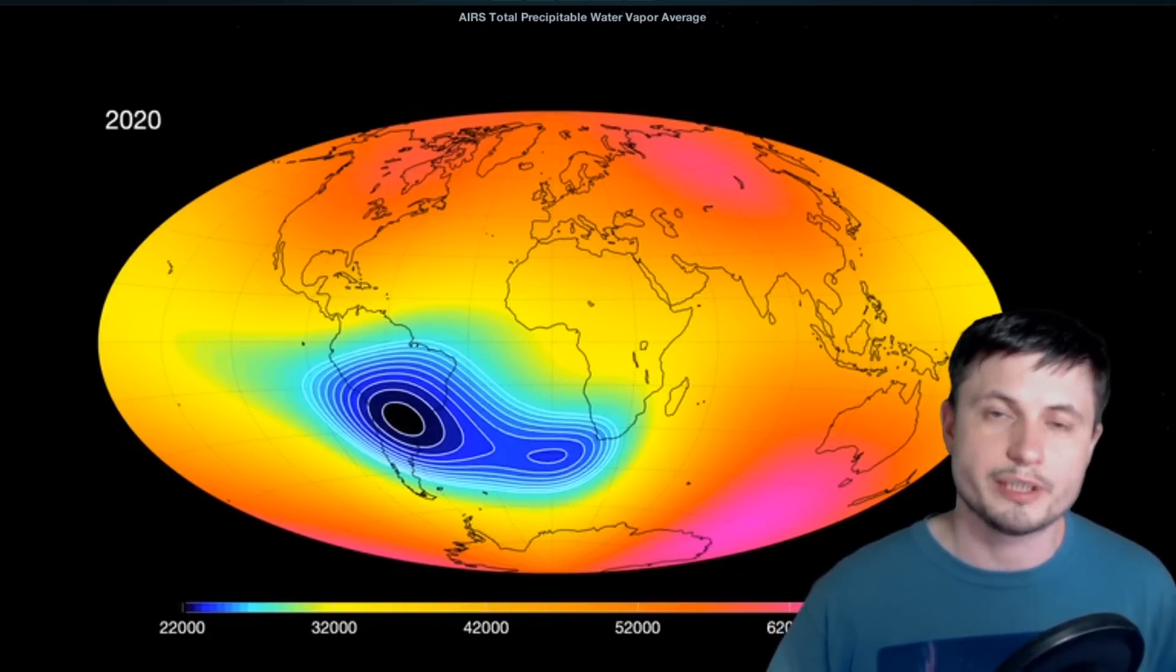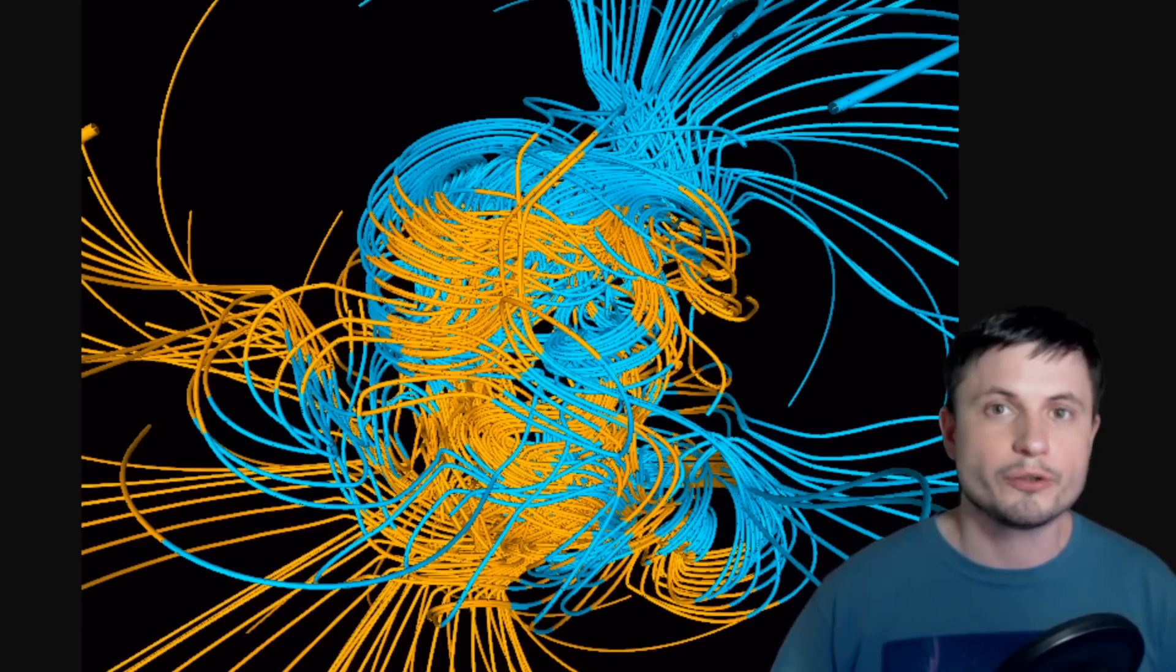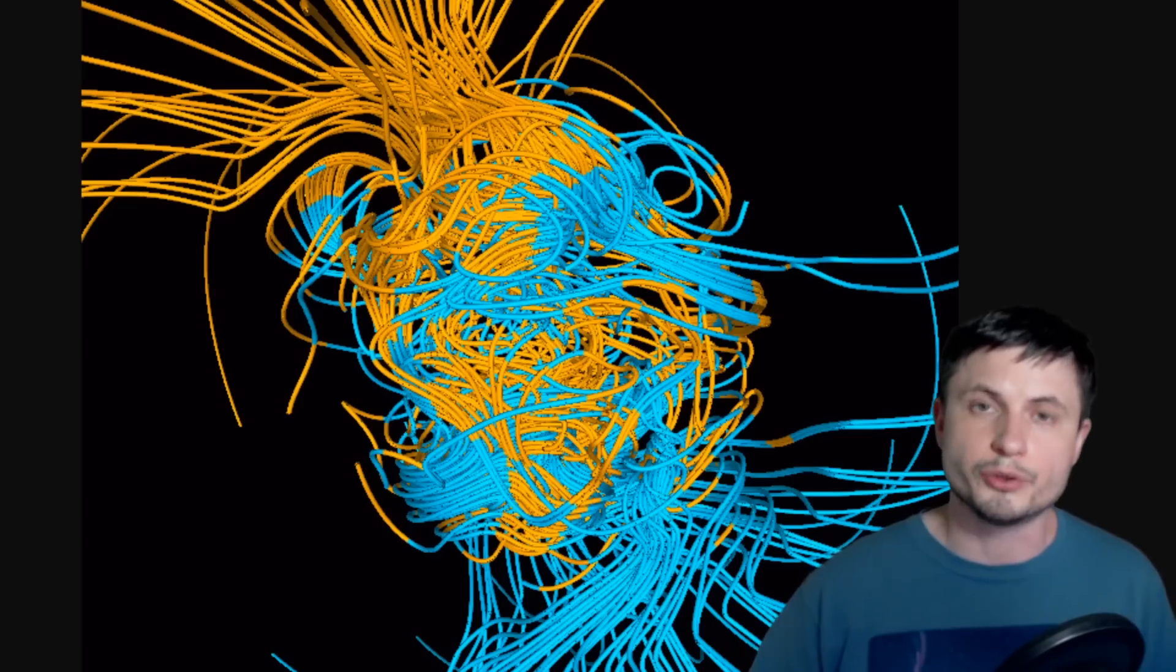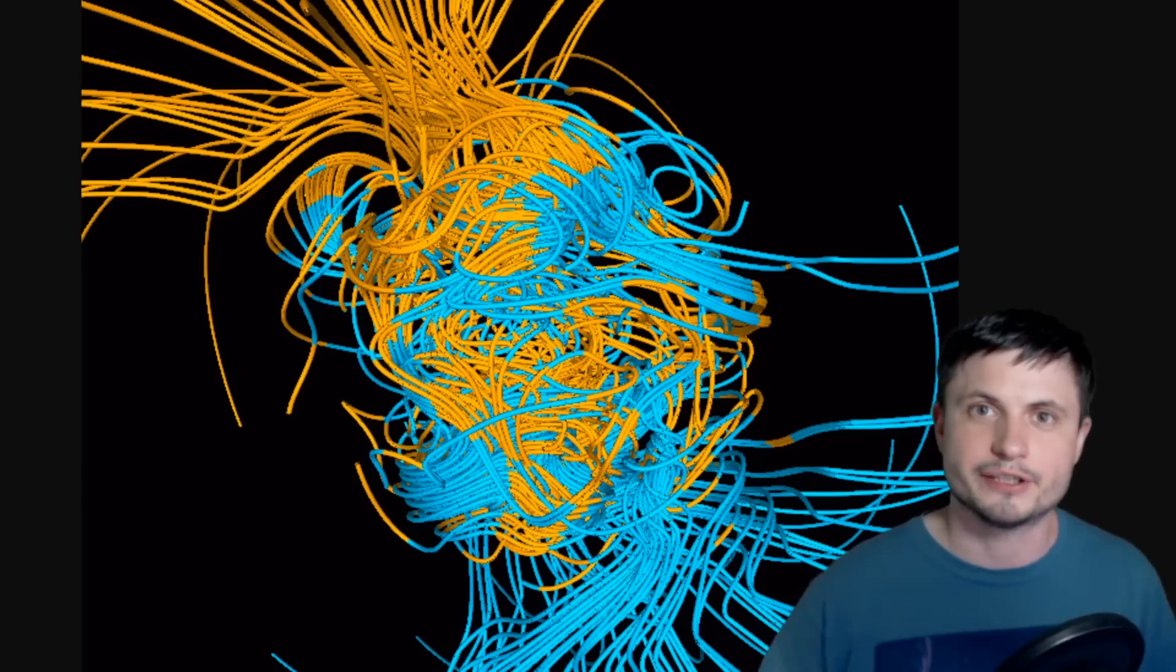And two, is that we're not sure if this is leading to the so-called magnetic pole reversal, something that our planet has gone through many, many times before, and something that our planet is sort of overdue for. It was supposed to happen approximately 500,000 years ago, but it still hasn't.